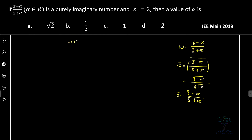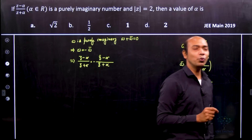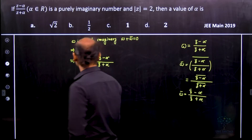Since omega is purely imaginary, we have omega + omega-bar = 0, which implies omega = −omega-bar. Therefore: (z − α)/(z + α) = −(z̄ − α)/(z̄ + α). Now we perform cross multiplication.